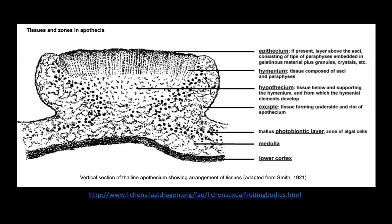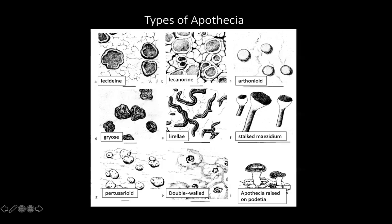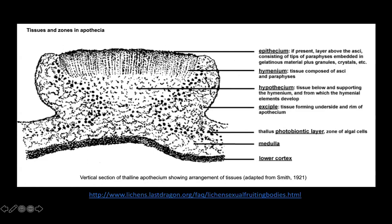The hypothecium is the tissue below the hymenium that supports it, and sometimes it can be pigmented. The excipulum is the tissue forming the underside and rim of the apothecia — it can extend around the edges or just be below, depending on the type of apothecia. The thallus includes the photobiont layer and medulla, and in some cases a lower cortex as well.